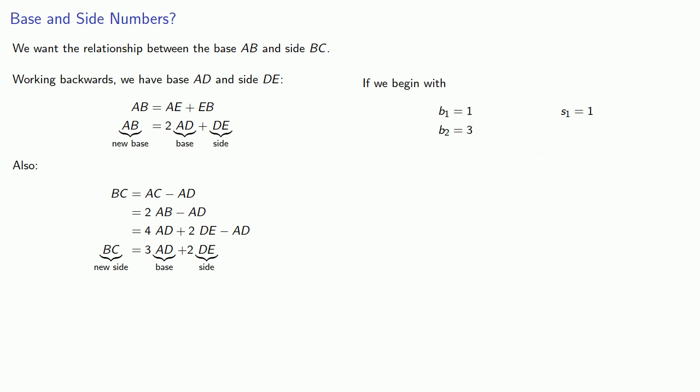And the new side is 3 times the old base plus twice the old side. And so this ratio 5 to 3 gives us a first approximation to the square root of 3.